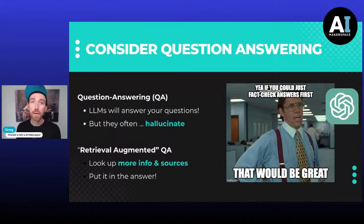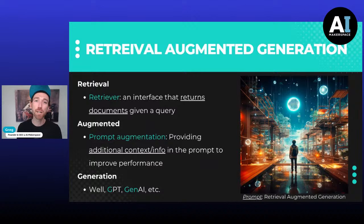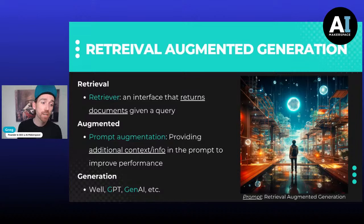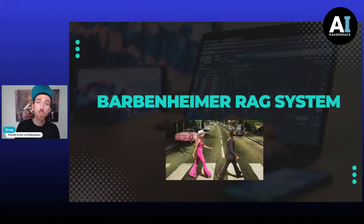It's very simple — we're looking up more information and sources so we can put those in the answer. The retrieval augmented generation name breaks down like this: the retrieval piece refers to a retriever, which is an interface that returns documents in any given query context — essentially a way to find relevant information. The augmented piece is talking about augmenting your prompt or input to the LLM to provide additional context retrieved from your source documents. The generation, of course, is just generative.